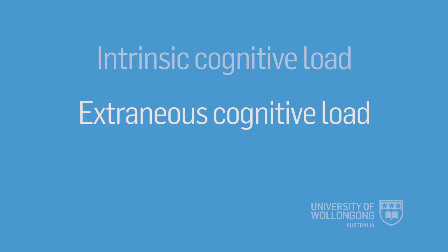The second type is extraneous cognitive load. That's the additional extra images, extra information, extra detail that isn't central to learning — it's not part of the essential concept. So it's not really necessary for learning and can in fact impair learning.